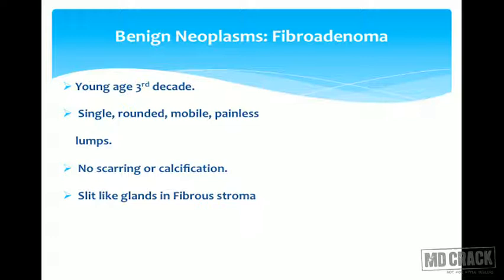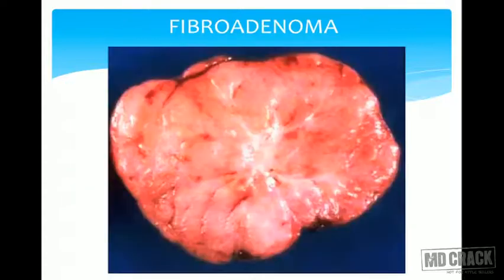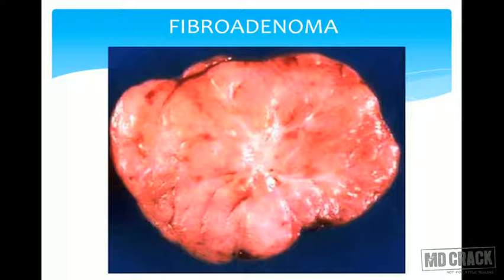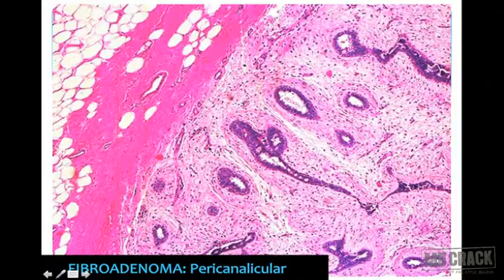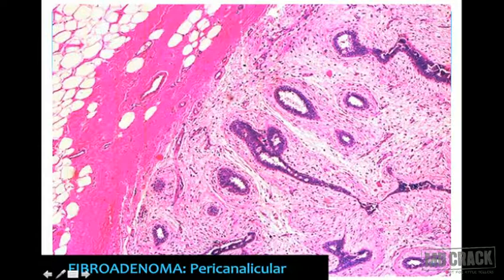Radiologically, fibroadenomas show no calcification and no scarring. Microscopically, they consist of hyperplasia of both ductal and stromal components without features of anaplasia — no mitotic figures. You see slit-like glands within a fibrostroma. The tumour is well encapsulated, showing two histological patterns: pericanalicular and intracanalicular. Ducts are lined by single or stratified ductal epithelial cells and can show apocrine metaplasia. Simple lumpectomy is sufficient treatment.